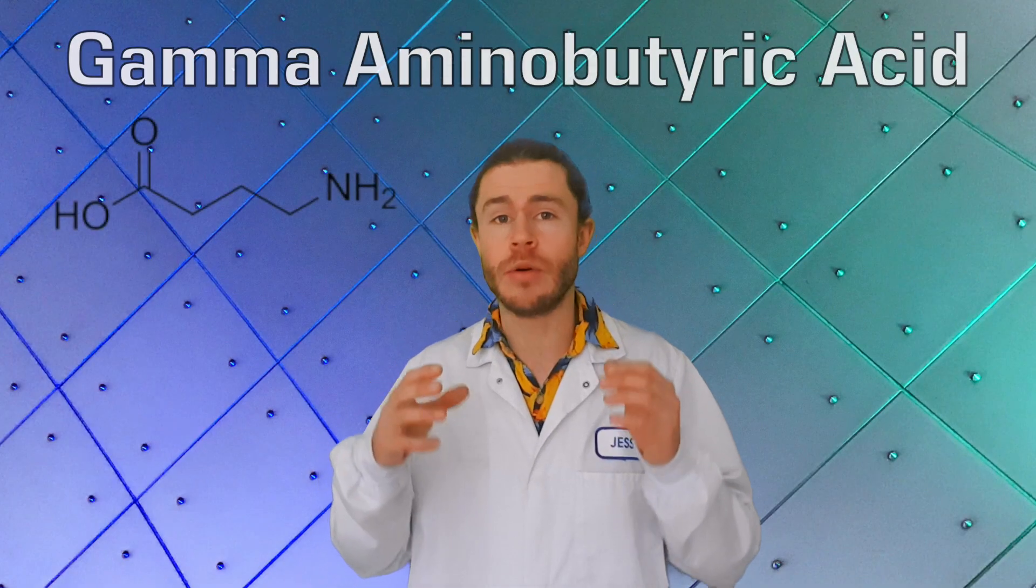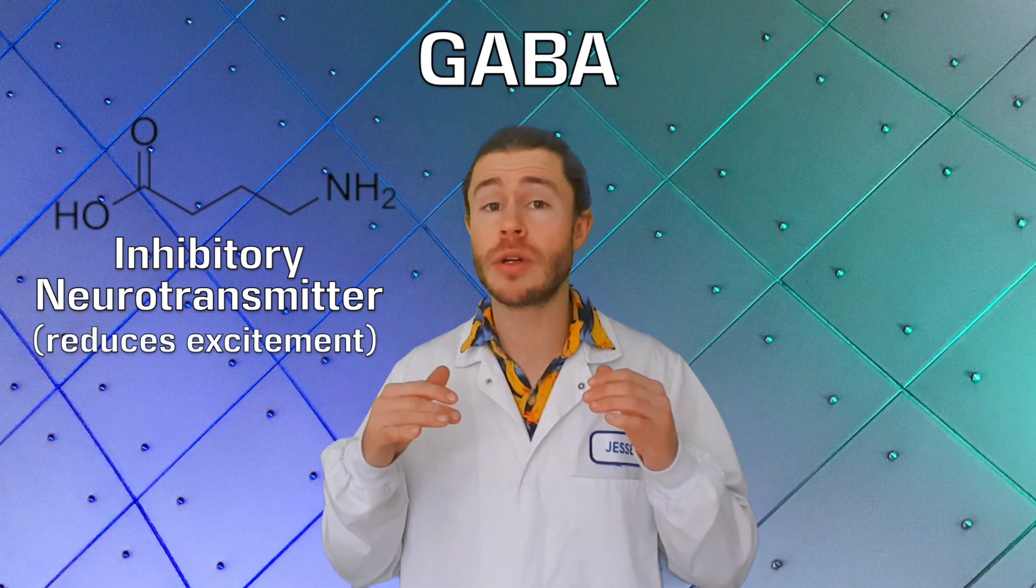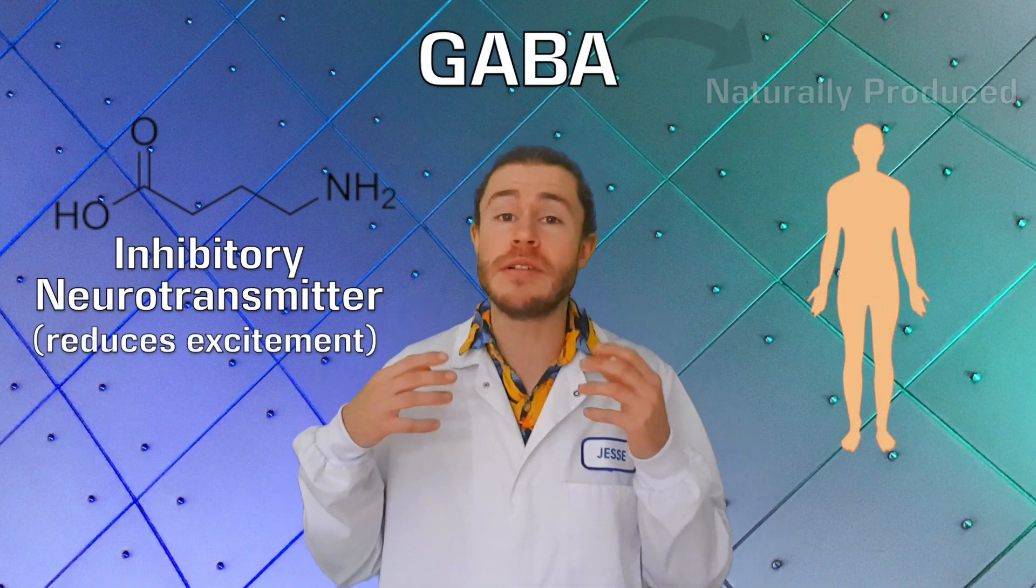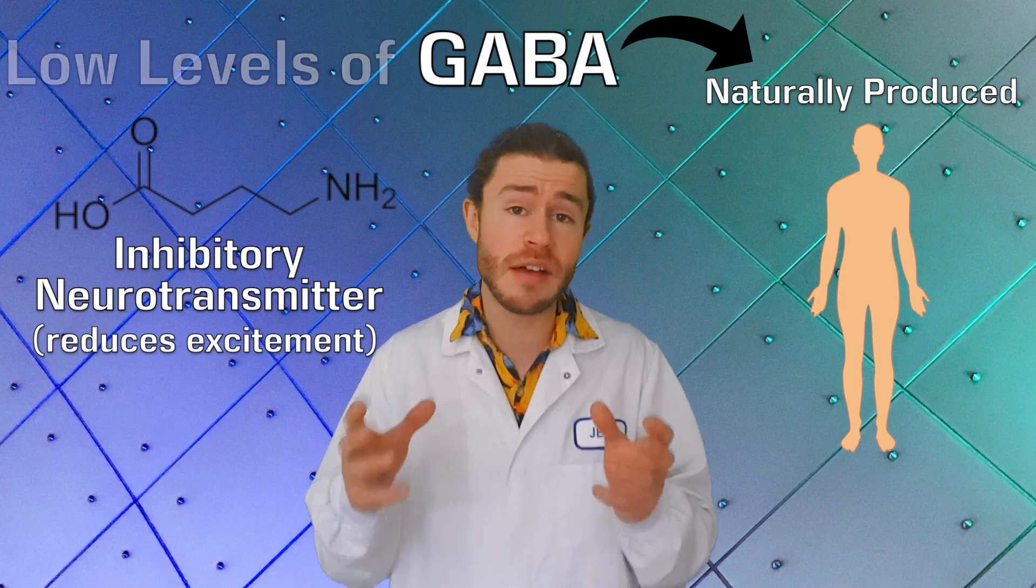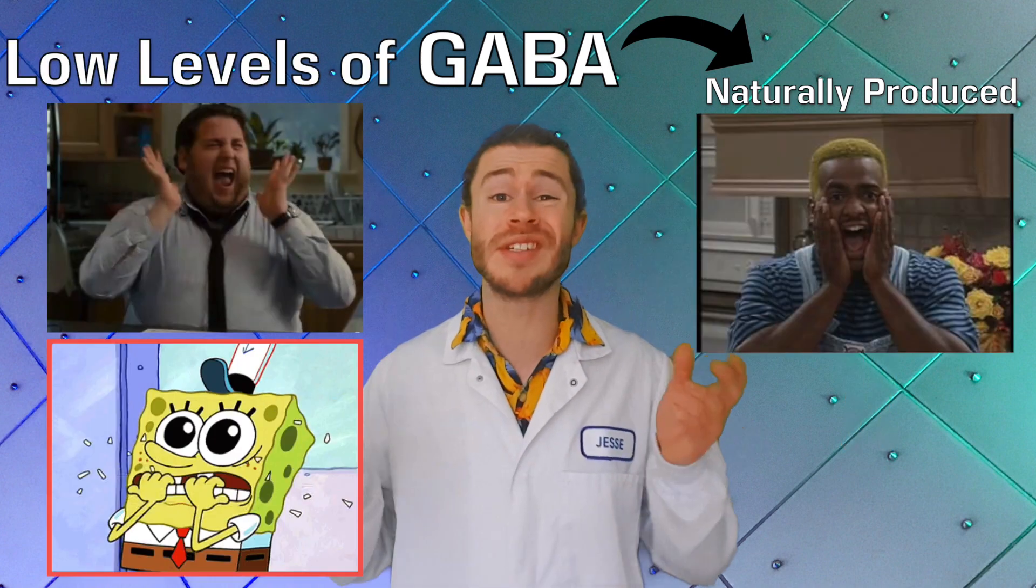Gamma Aminobutyric Acid, or GABA, is an inhibitory neurotransmitter that reduces neuronal excitability. Our body produces GABA naturally, but if you don't have enough of it, it's easy to become overstimulated, excited, nervous and even anxious.